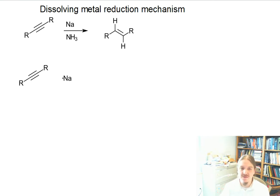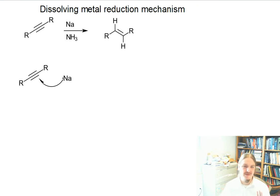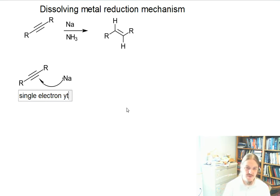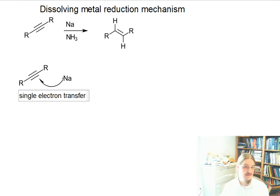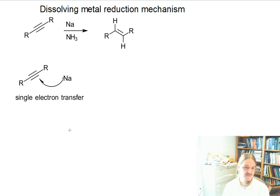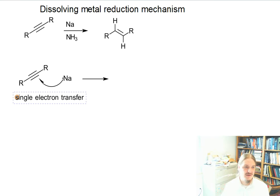Sodium in this case is our reducing agent, and sodium has a single electron in its valence shell. This is sodium metal, not sodium cations. As you may remember from general chemistry, sodium would rather not have that electron — it would rather be sodium-plus. In general chemistry, sodium's behavior often involved donating that electron to something to make an ionic compound. A very similar thing is going to happen here: sodium is going to donate that electron to the alkyne through a single electron transfer.